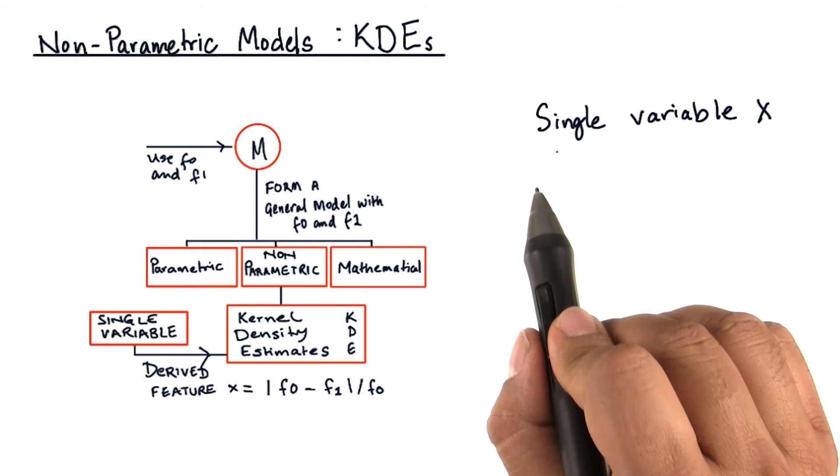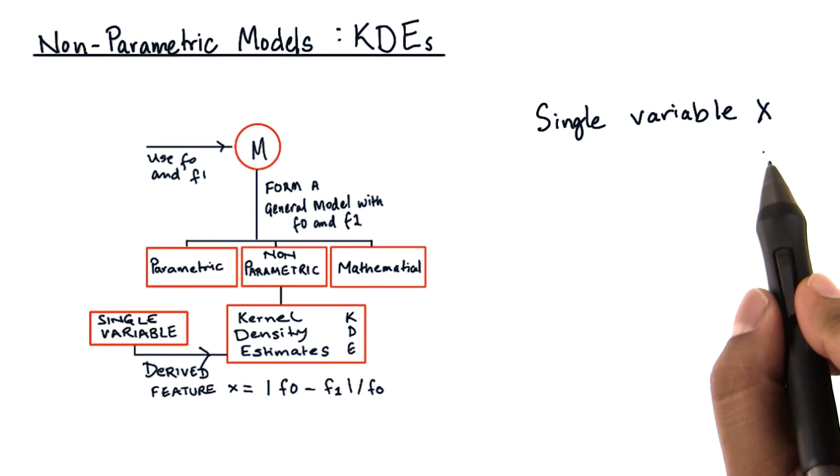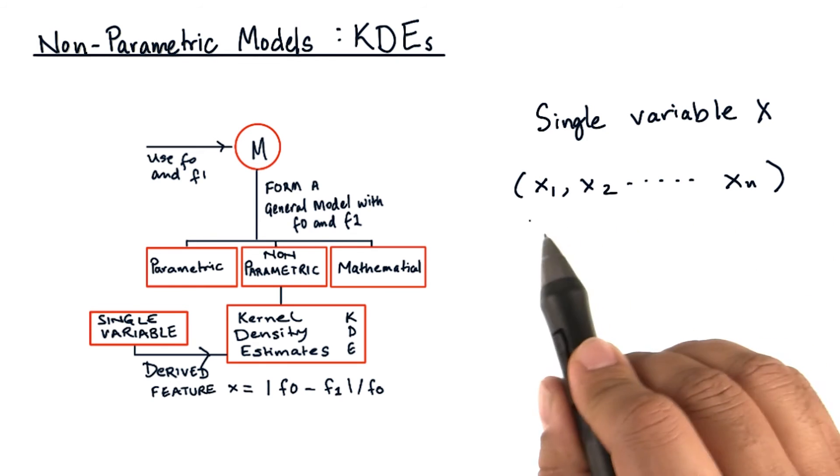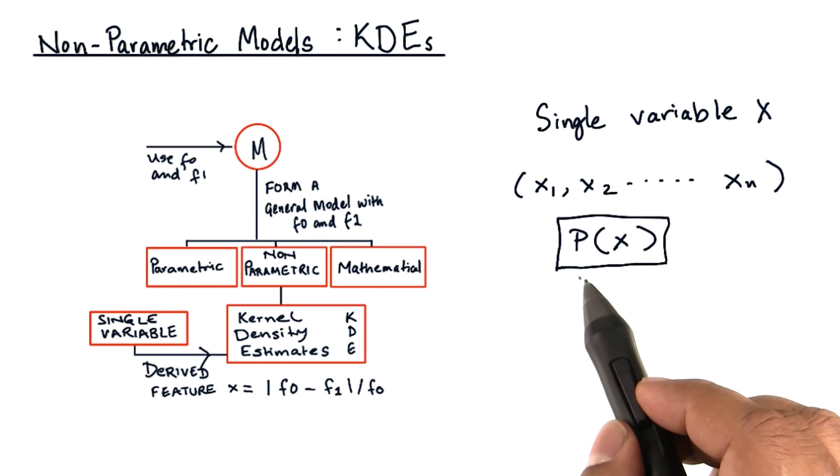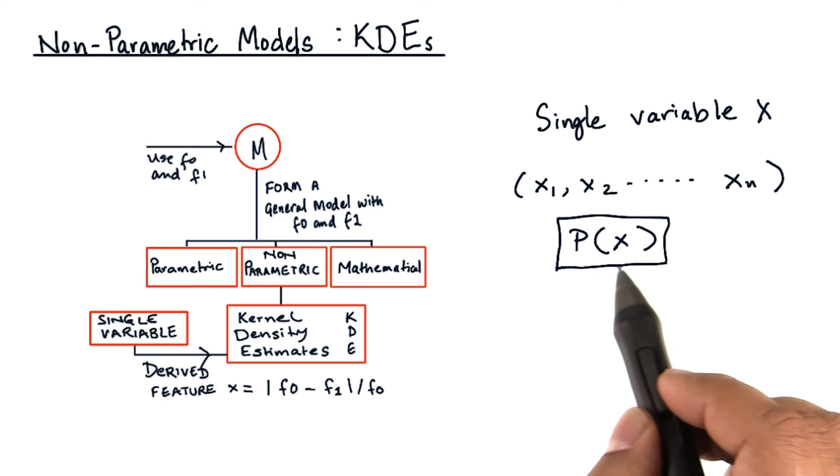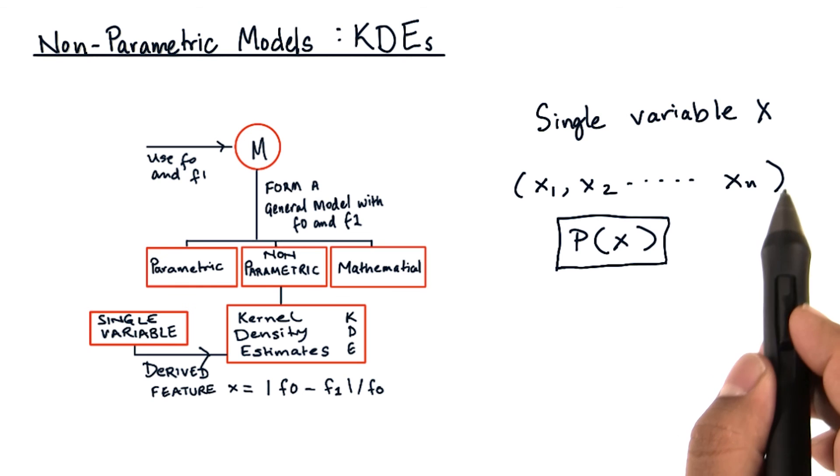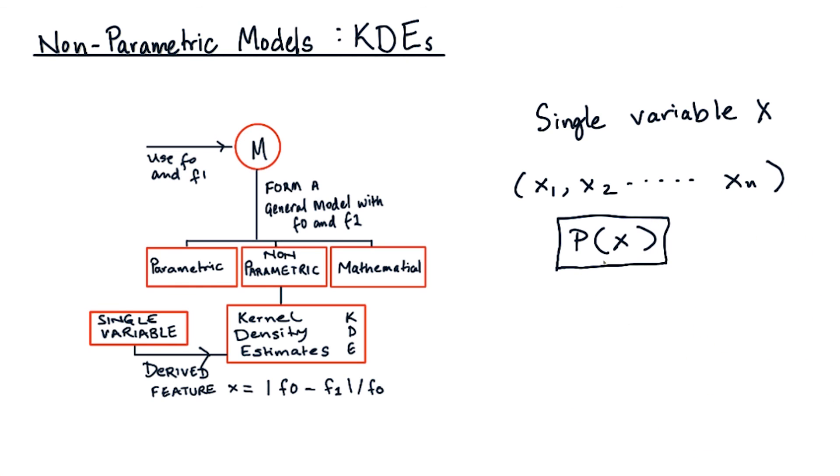In our case, we are going to use a single variable x. If x1, x2, to xn are data points, we are after a probability density function p of x that best describes the distribution from which x1, x2, and so on till xn could have been drawn from. How do we go about doing this?